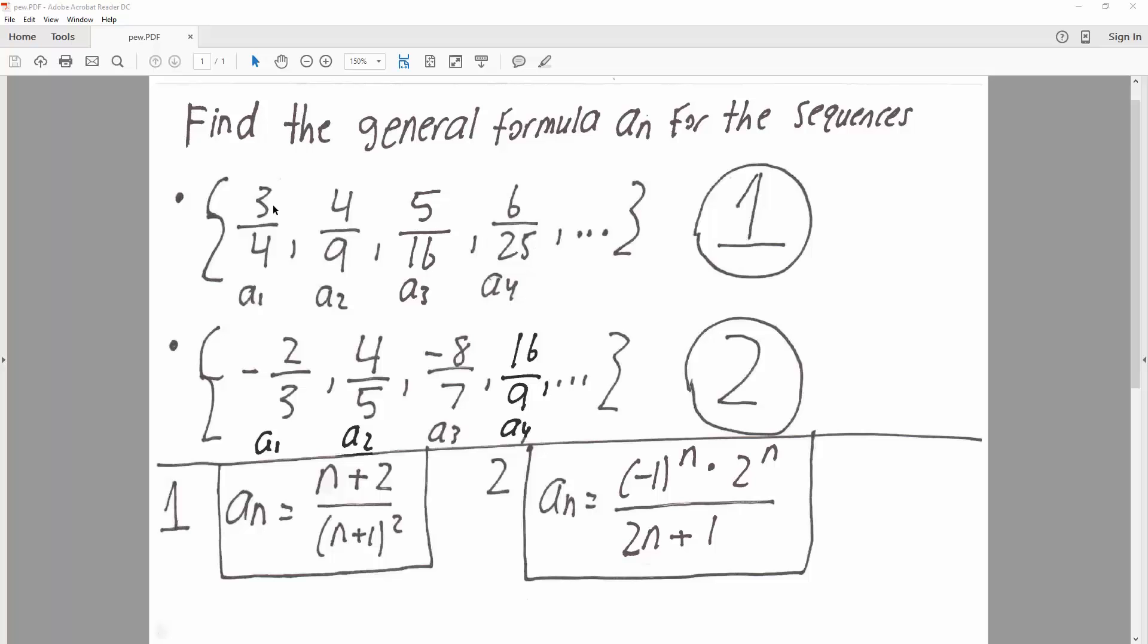and the fact that this increases by 1, so you have 3, 4, 5, 6. And now with those two pieces of information, I'm going to try to come up with a general sequence.